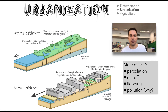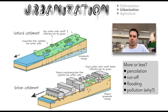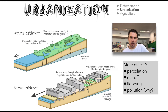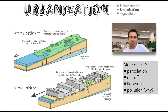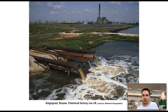Another implication of humans getting involved in the hydrologic cycle is urbanization. There are some things to think about here: do we get more percolation or less percolation — that's water movement through the soil — more runoff or less runoff, more flooding or less flooding, and more or less pollution when you have an urban environment? When you have those environments, you have a lot of changes to those places.